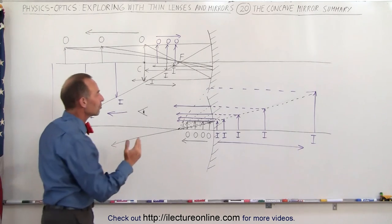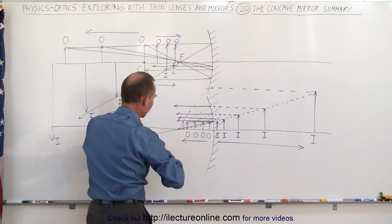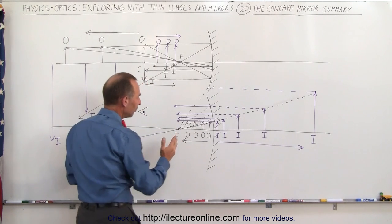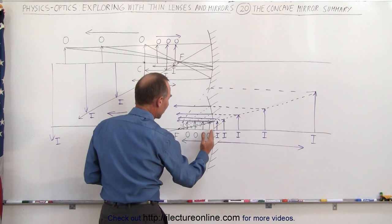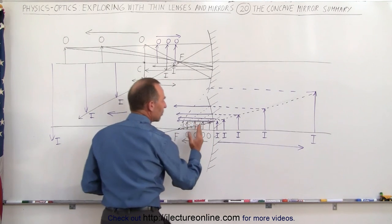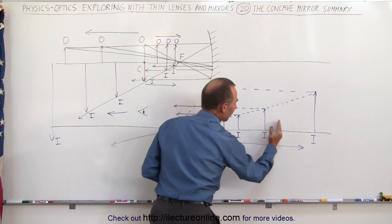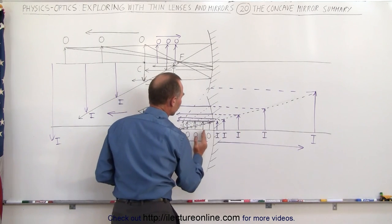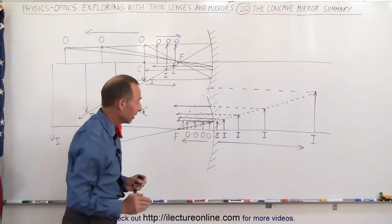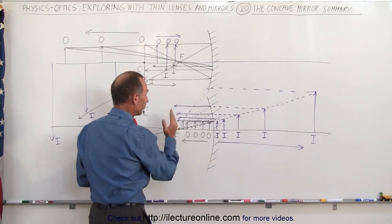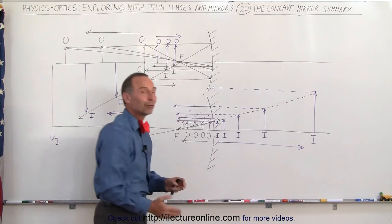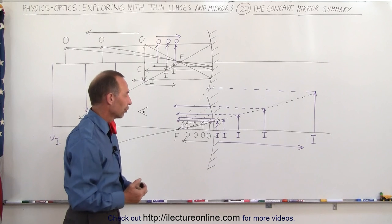Now let's place the object between the focal point and the mirror. As we bring the object closer and closer to the focal point, notice the image will form farther and farther away from the mirror. As we move the object closer to the mirror, the image will form closer to the mirror as well. But in all cases, when the object is somewhere between the focal point and the mirror, the image will form behind the mirror, therefore all those images are virtual.